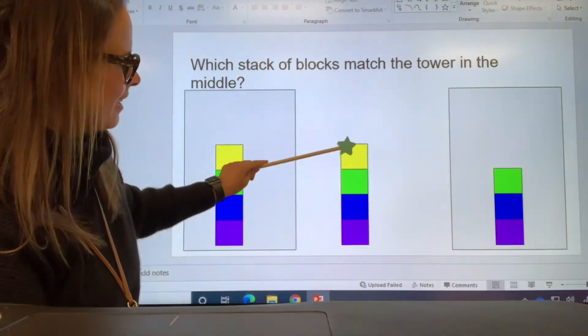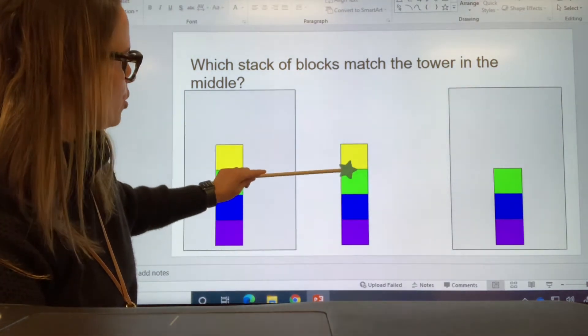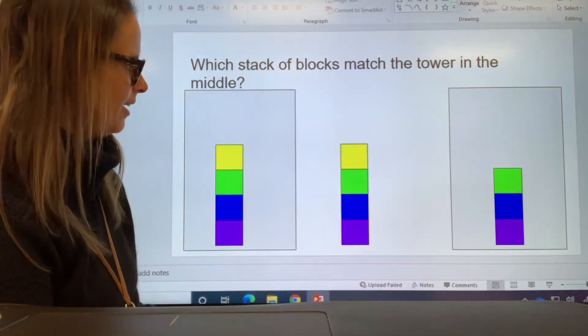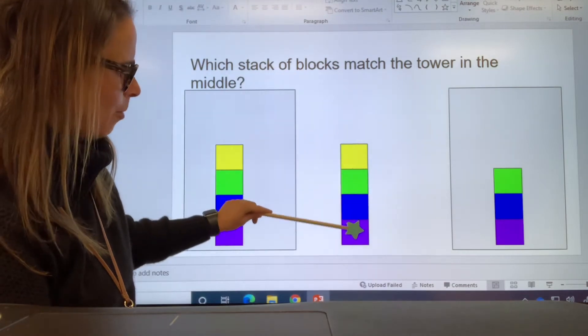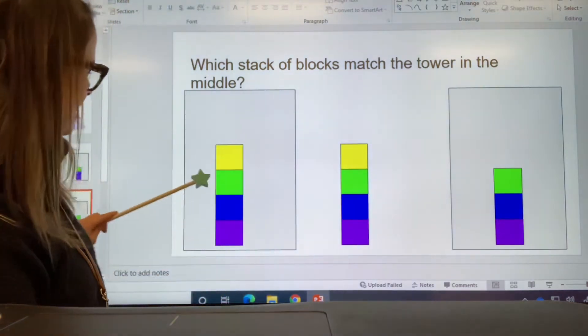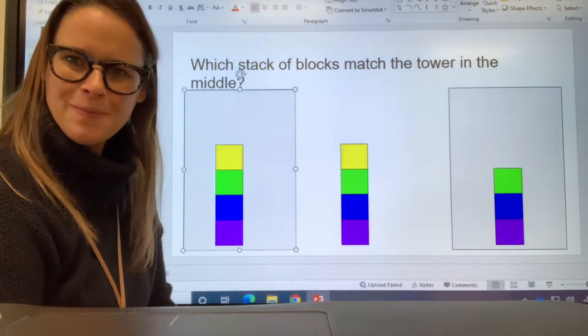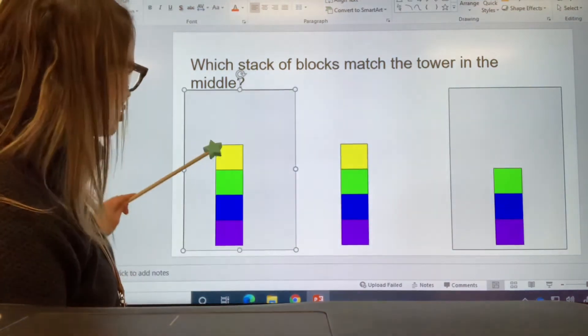Let's take a look again. Let's count. One, two, three, four. Yellow, green, blue, purple. Which one matches this one? Which one matches this one? Does this one match? Or does this one match? Point to it. Good. This one matches, right?